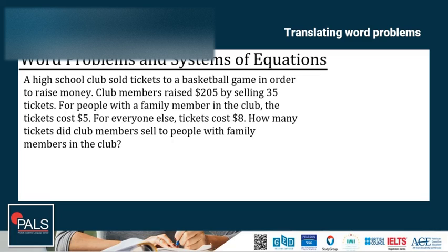For people with a family member in the club, the ticket cost $5. For everyone else, tickets cost $8. How many tickets did club members sell to people with family members in the club? F plus T is equal to 35, the number of tickets sold to family members, which is F, and T for the number of tickets sold to everyone else. Another equation is 5F plus 8T, which represents $5 times the number of tickets sold to family members, and $8 times the number of tickets sold to everyone else, and the total amount is $205.